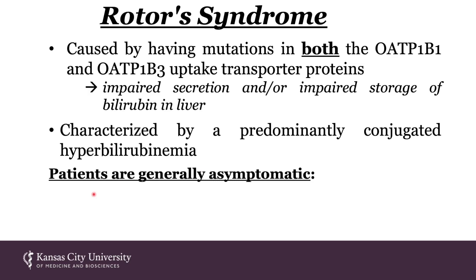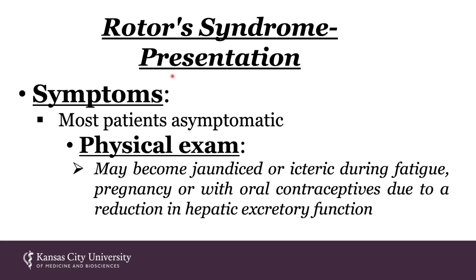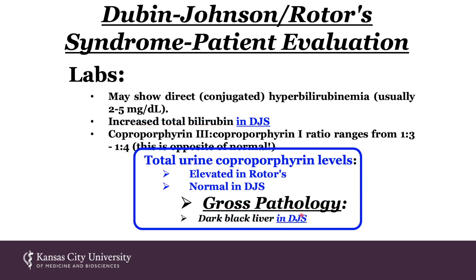Rotor syndrome results in impaired secretion and/or storage of bilirubin in the liver and is characterized by predominantly conjugated hyperbilirubinemia. However, patients are generally asymptomatic — you may find incidental jaundice. More than 50% of serum bilirubin is conjugated, and bilirubin in urine is typically present. Most patients are asymptomatic, although they may become jaundiced during fatigue, pregnancy, or with oral contraceptives. Total urine coproporphyrin levels are elevated in Rotor's but normal in Dubin-Johnson. In Dubin-Johnson, the gross pathology is a dead giveaway: a dark black liver.